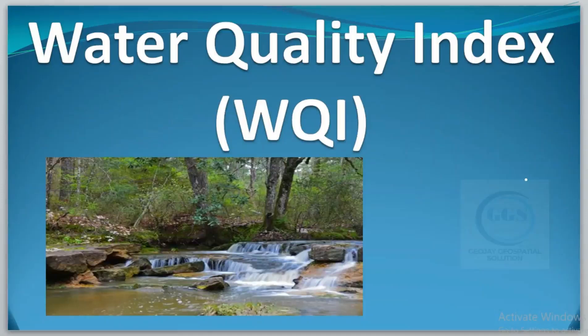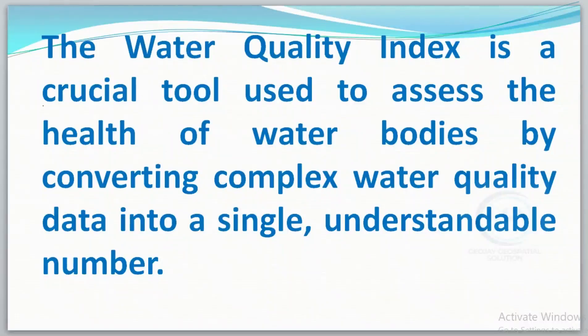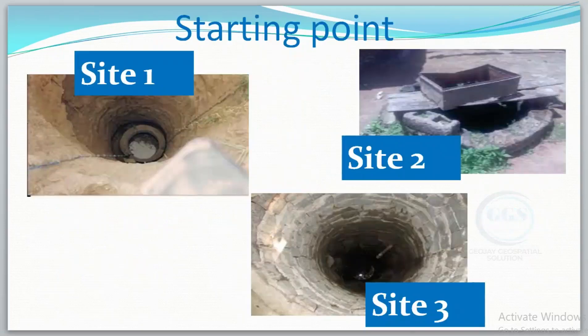In this video I want to explain what Water Quality Index is, in the simplest way that you can even explain it to a child or someone who has never heard of it before. Water Quality Index, also known as WQI, is a crucial tool used to assess the health of water bodies by converting complex water quality data into a single understandable number — essentially a tool used to assess, monitor, and analyze water quality data.